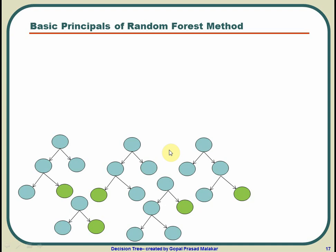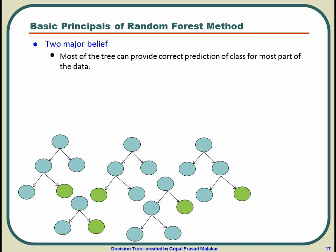How do you use that? What is the benefit of getting many trees? There are two major beliefs that help us use this method. The first is that most of the trees can provide correct prediction of class for most part of the data. So decision trees are usually correct. It is only some fraction, some part of the data where it goes wrong. And the second belief is that the trees are making mistakes at different places. All the trees are not making mistakes at the same place.